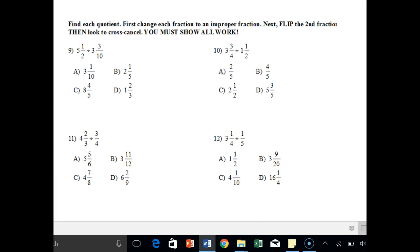On the back side, it says find each quotient. So first change each fraction to an improper fraction. Next, you need to flip before you look to cross cancel. That's huge. And you must show all work. So let's do number 9. So 5 times 2, that's 10. 3 times 10, that's 30. So we have 11 over 2 still divided by 33 over 10.